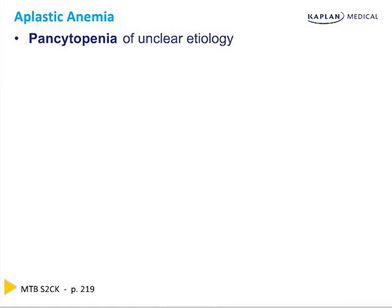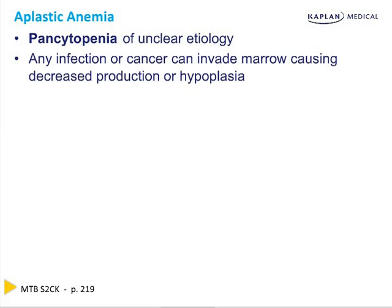Aplastic anemia is pancytopenia — pancytopenia means all three cell lines. The whole marrow is shut down. It's pancytopenia of unclear etiology. Any infection or cancer can invade the marrow and cause decreased production or hypoplasia of the marrow.